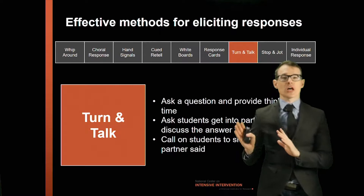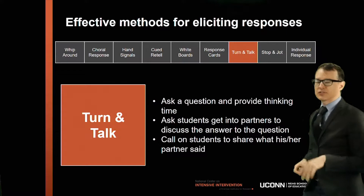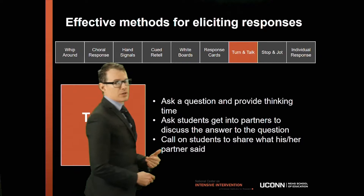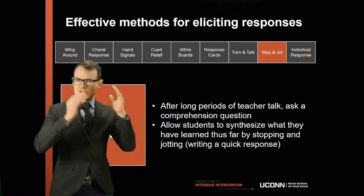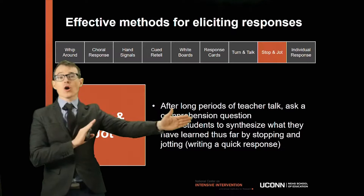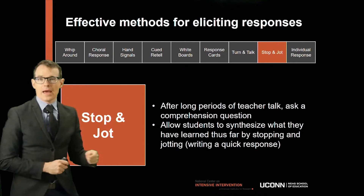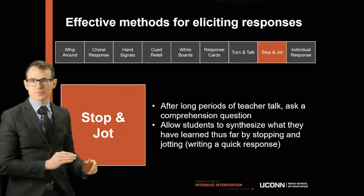Turn and Talk is probably the listening response method I use most often. It's an opportunity for students to get into the content with a partner in slightly more detail than other methods allow. You ask a question, give students a chance to think about it, then ask them to talk with their partners about their answers. It's a great way to get all students engaged simultaneously and give them a chance to learn from peers—partner learning is one of the best evidence-based strategies for students with disabilities who need intensive intervention. Stop and Jot is a great way to quickly get students to think about something: after teaching content, ask a comprehension question and ask students to jot their thinking—sometimes called a quick write. It's a nice way for students to synthesize what they've learned.